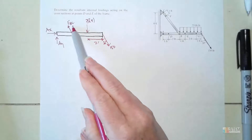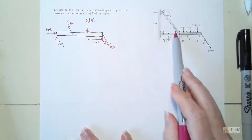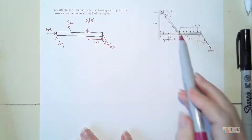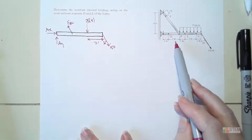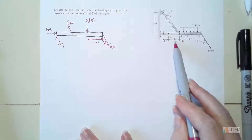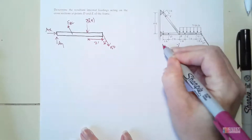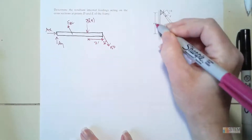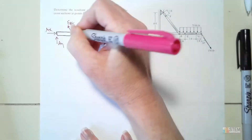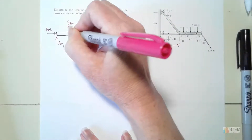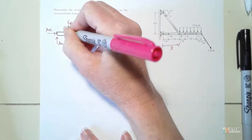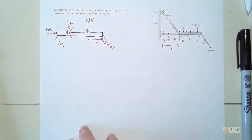For FBC, we're not given an angle, but you could find it — or you could recognize that this side here is 3 and this one is 4, giving us a 3-4-5 triangle. We can use that instead of finding the angle explicitly.